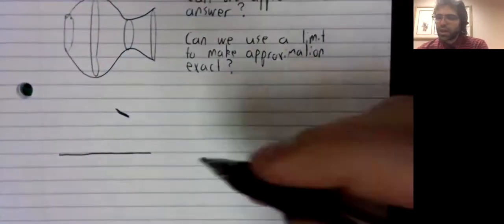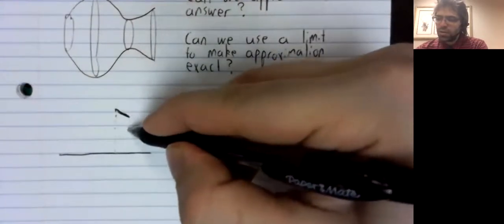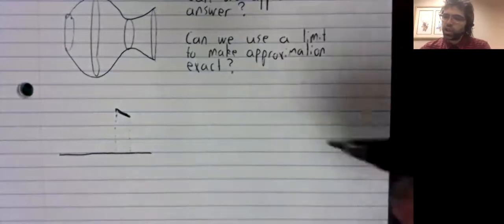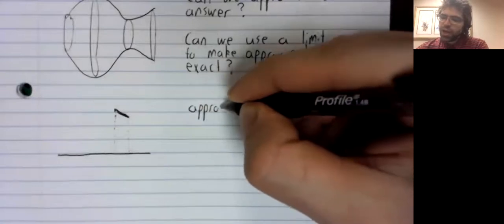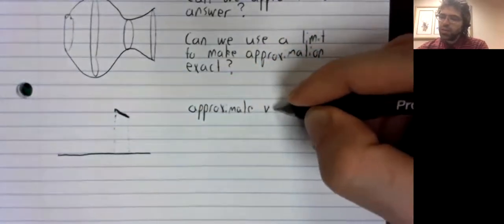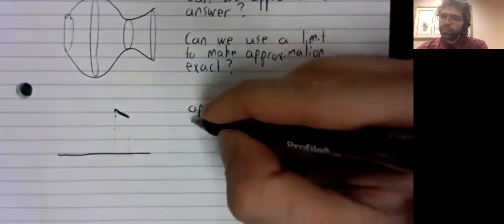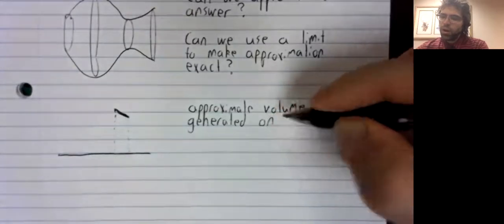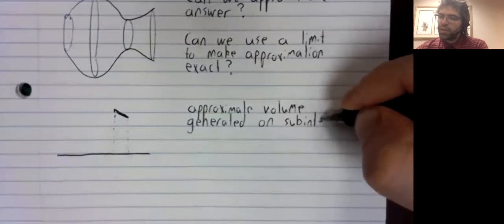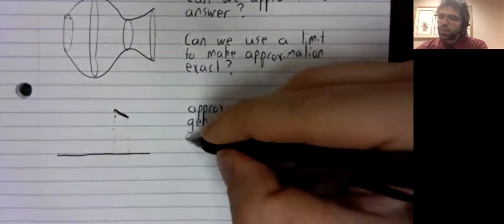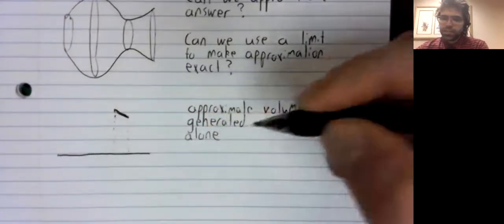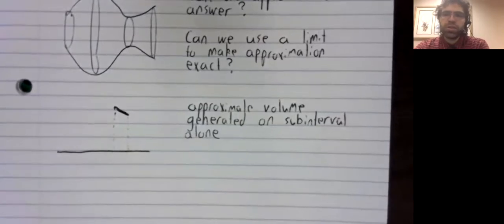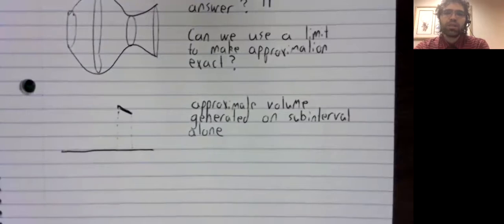And let's look at the curve on one of these little sub-intervals in the partition. And let's try to approximate the volume generated on this sub-interval alone.